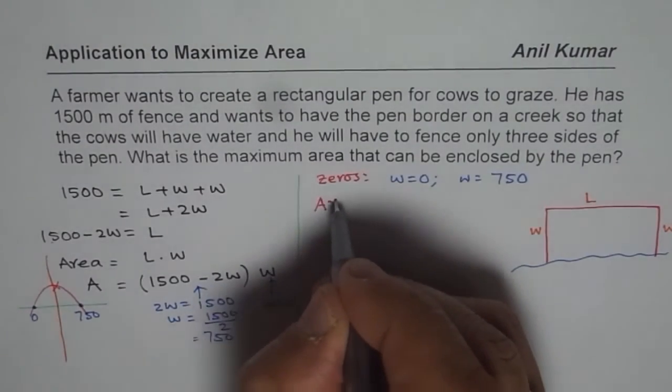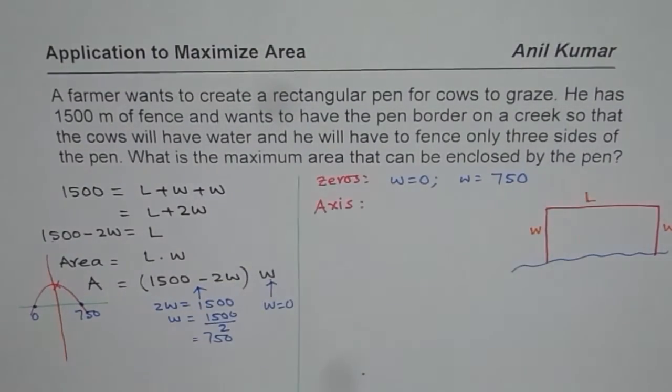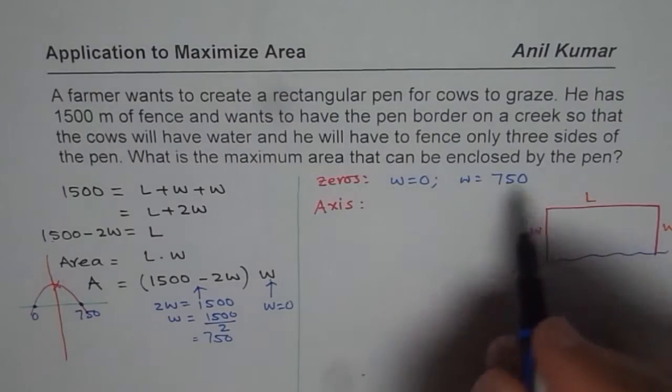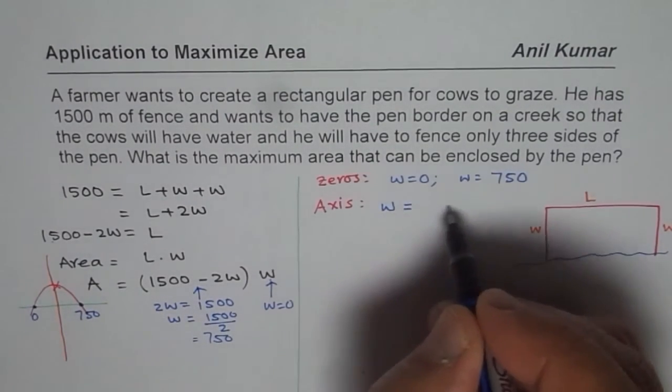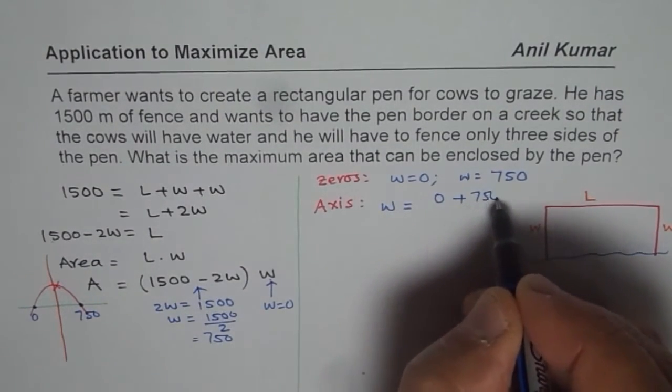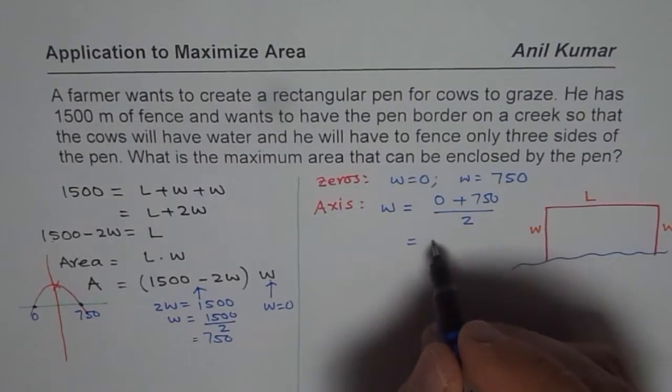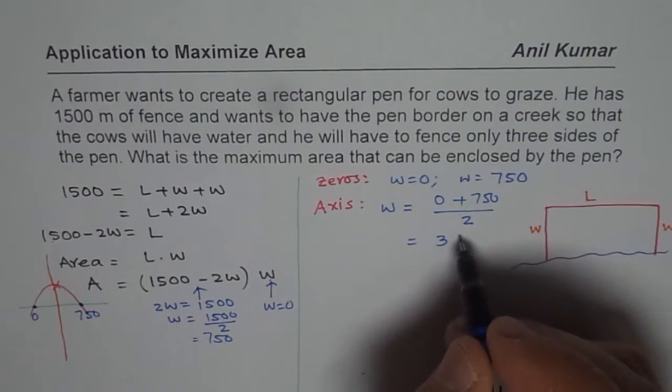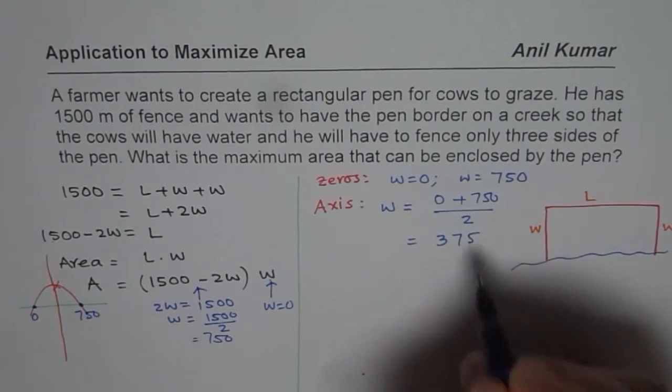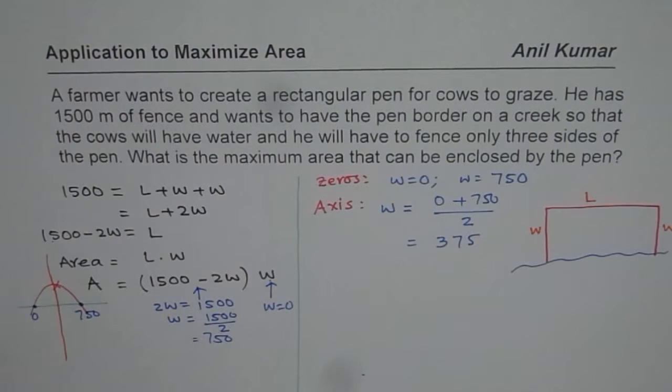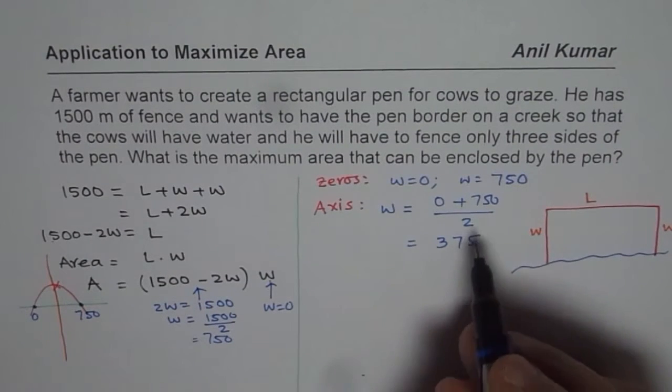Now, let us find the axis of symmetry. So axis of symmetry will be the average of these two zeros, center line. So that is 0 plus 750 divided by 2. So if you divide 750 by 2, you get 375, correct? So width of 375 will give you maximum area.